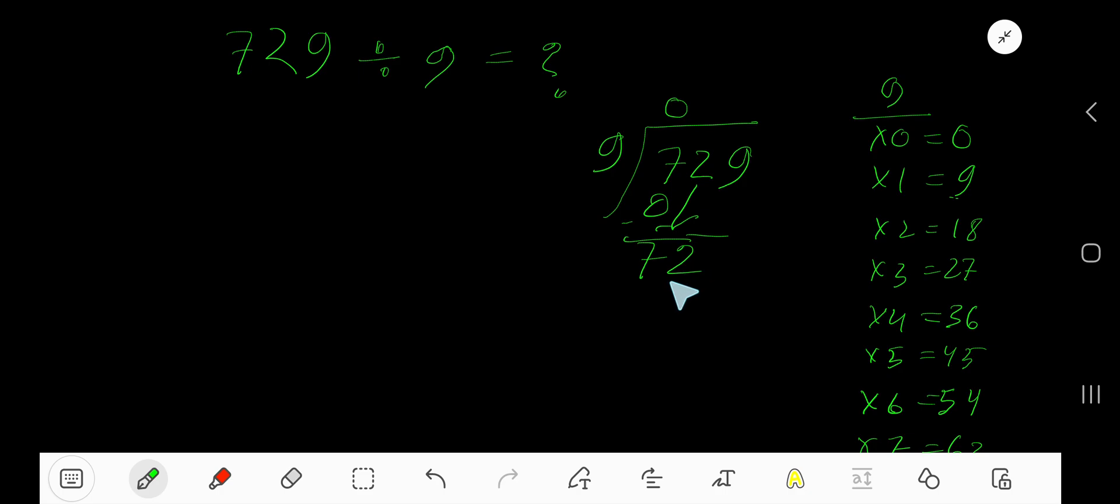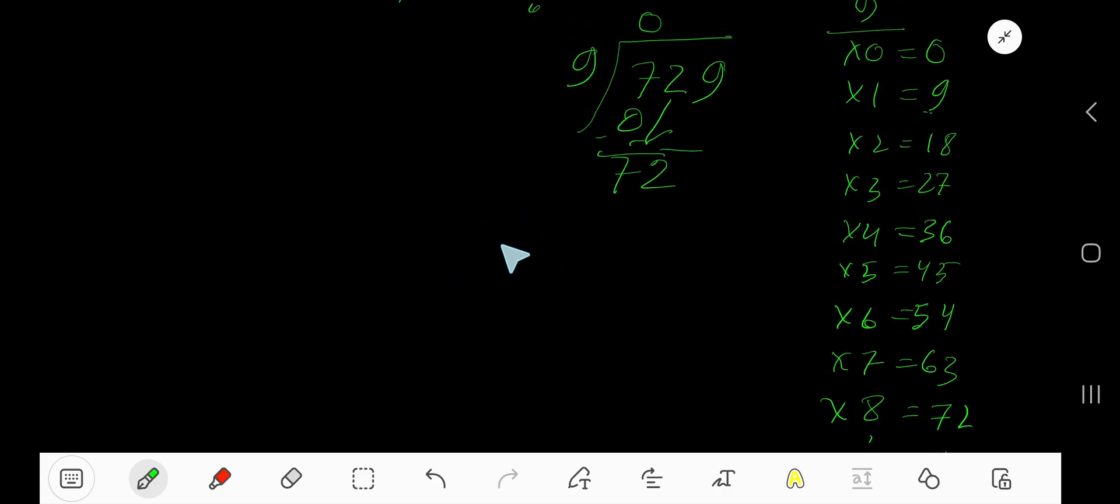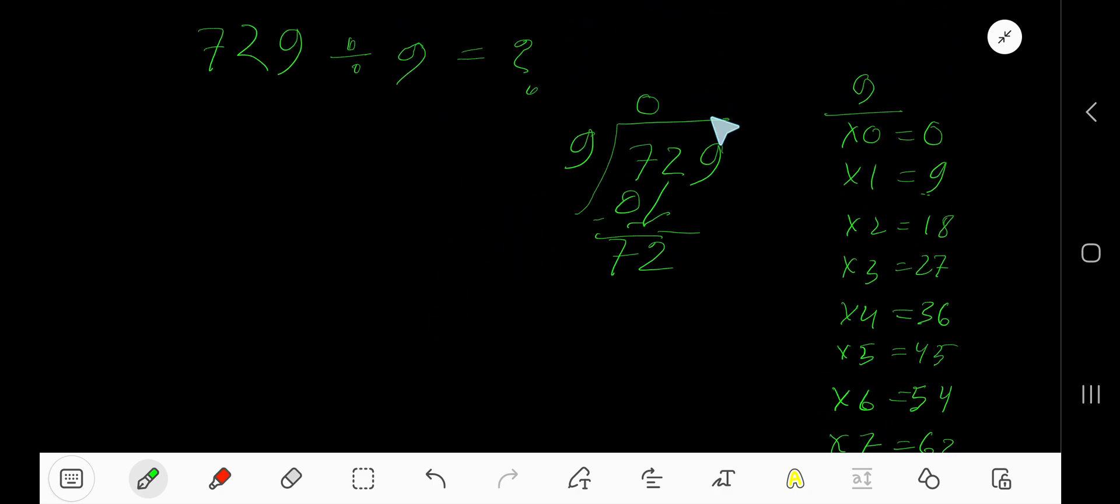9 goes into 72 how many times? 9 goes into 72 eight times. So write 8. 8 times 9 which is 72. Subtract 0. Bring down this 9. Now our current dividend is 09.